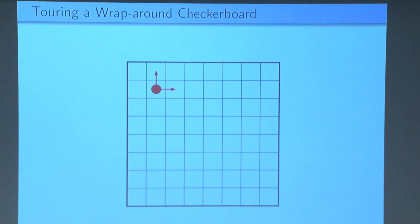So we can ask the same question. For what sizes of wraparound checkerboards is the checkerboard Hamiltonian? Here's an example of how the checker might move. It might hit the right boundary, return to the left boundary, hit the top boundary, return from the bottom.